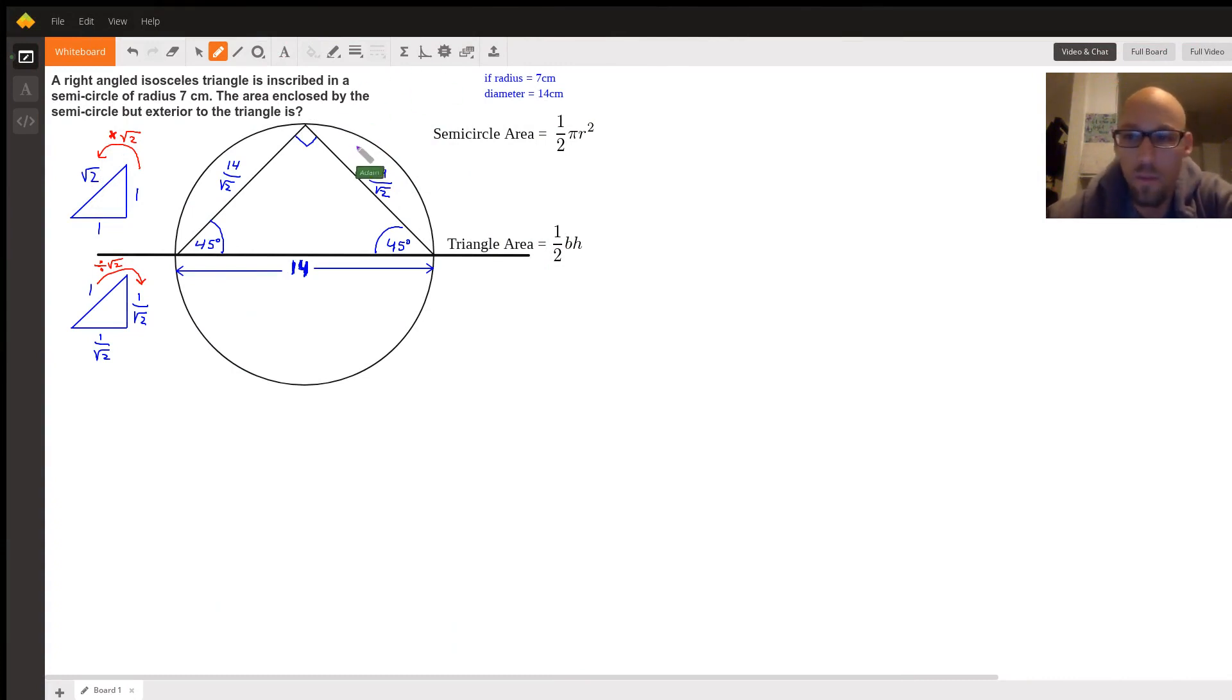Hey nerds, listen up. We're about to solve this problem: a right-angled isosceles triangle is inscribed in a semicircle of radius 7 centimeters. I just drew a circle here, radius 7 centimeters, which also means diameter 14 centimeters. And I drew an isosceles triangle inscribed in this semicircle.